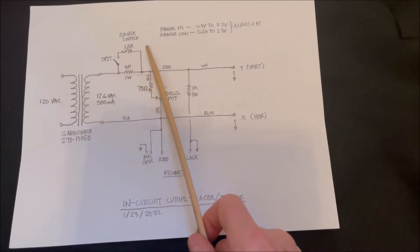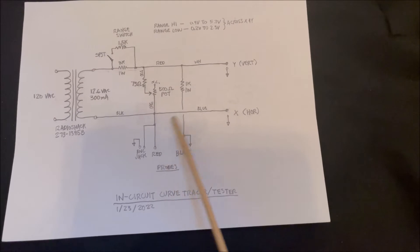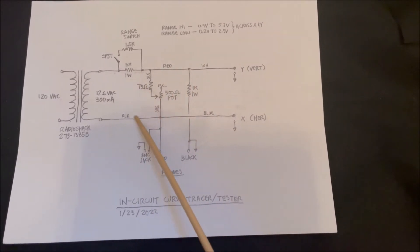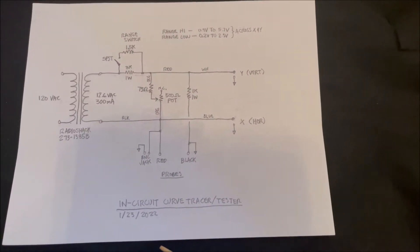I added a range switch here so I could vary the voltage across the probes and what the scope is seeing, and I have a variable control here so I can adjust the size of the image on the screen.